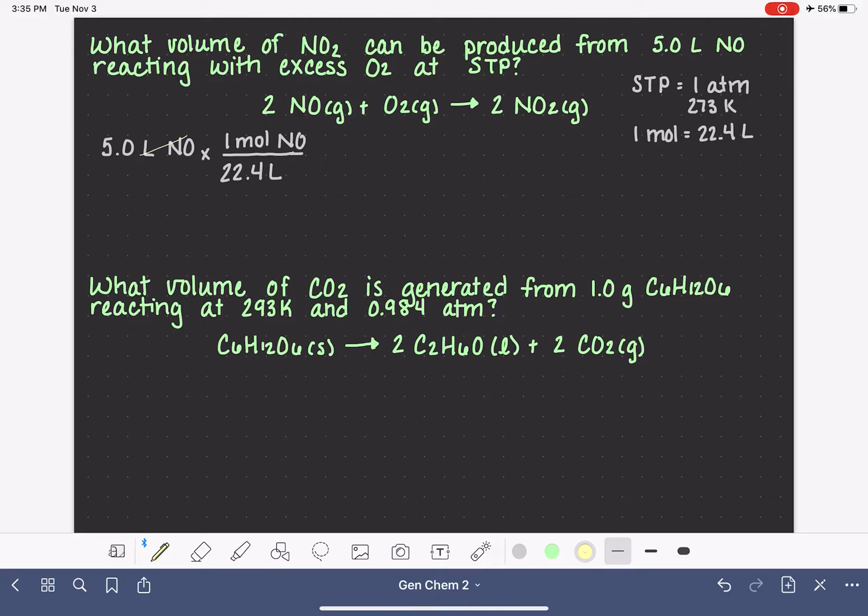So this step that we just did right here is going to cancel out our volume liters of NO gas. And once we have converted into moles of NO, then we're going to use our normal strategies for solving stoichiometry problems. We want to cancel out units of moles NO, and we're trying to get into units of NO2. That's what we're trying to calculate for.